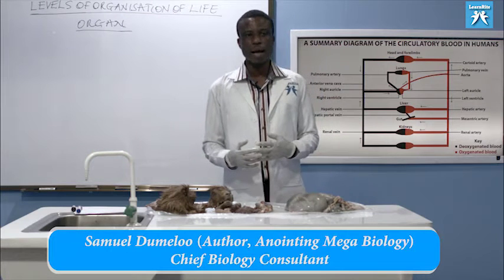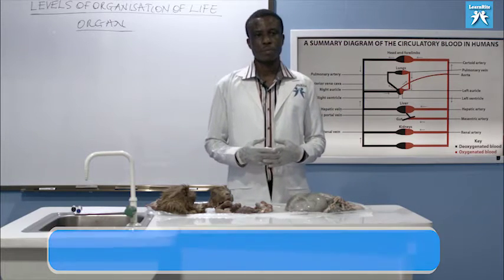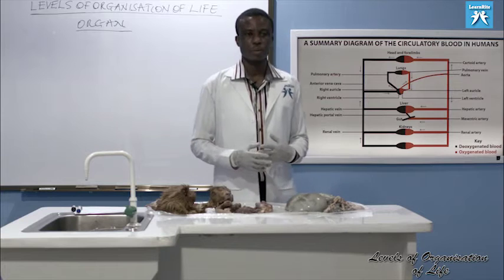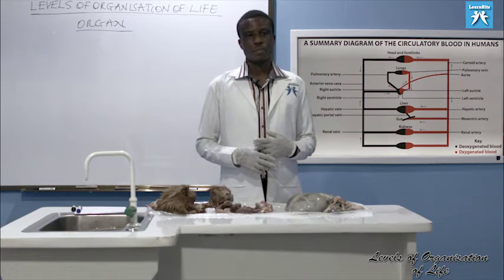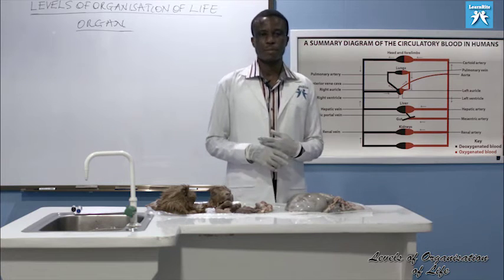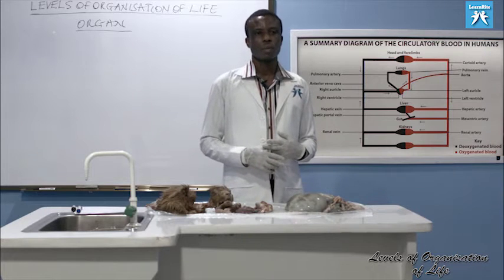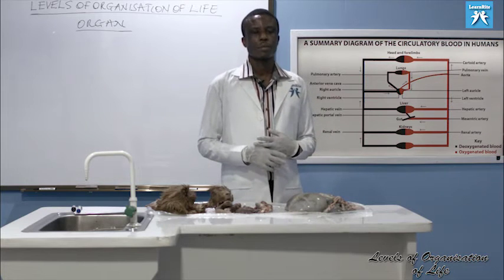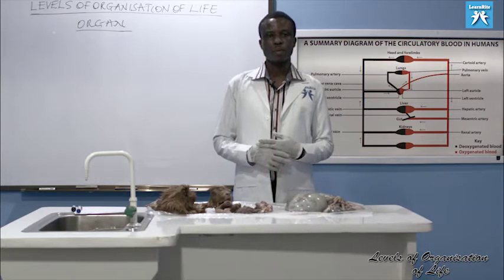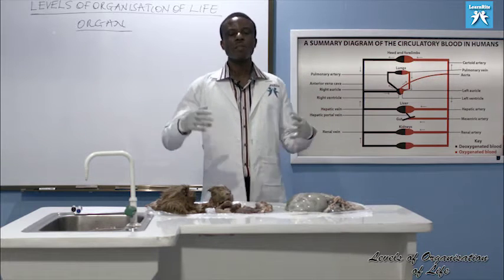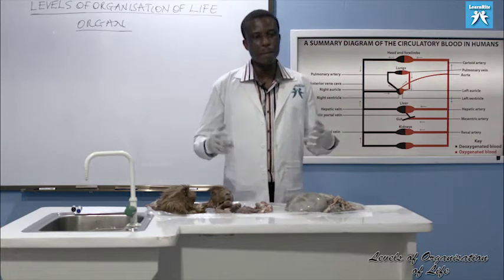Let's look at examples of organs in animals. An animal such as a goat is a living thing. The life of a goat is organized from the cellular level through tissue, then organ, to another level we'll mention later. For now, let's look at some organs in the goat — a typical mammal.